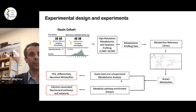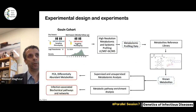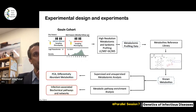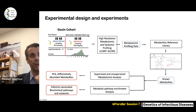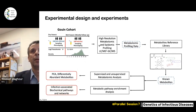We went back to the same cohort and profiled more individuals — 100 individuals before infection and during infection. No parasitemia was detected before infection, and during infection you can see a very nice range of parasitemia levels going from very low to very high. We isolated serum samples and did high-resolution metabolomic profiling using the metabolome platform.